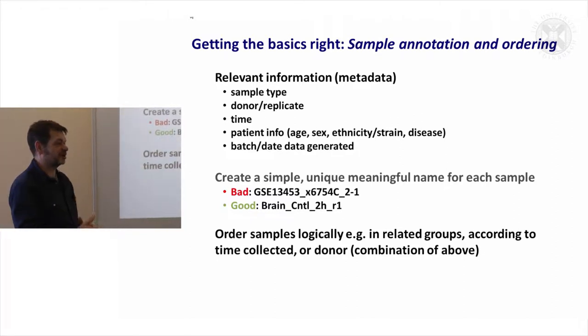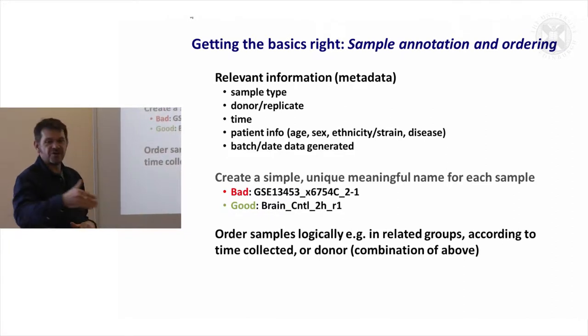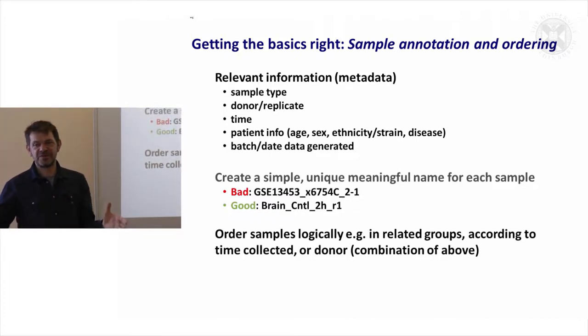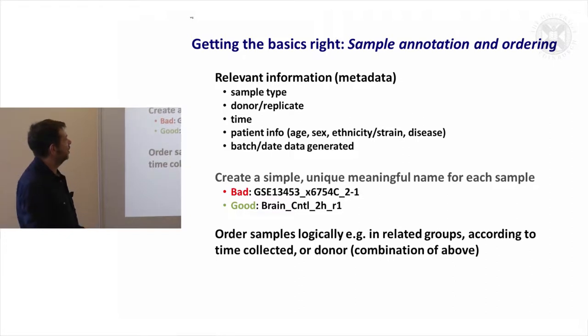Donor or replicate - you run a number of replicates, but all those replicates might not be the same if they've come from different animals or different humans. You want to know that information because one of your replicates might not have worked, and you want to be able to identify what samples have come from what individual.